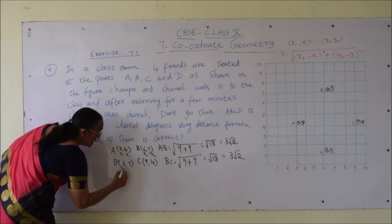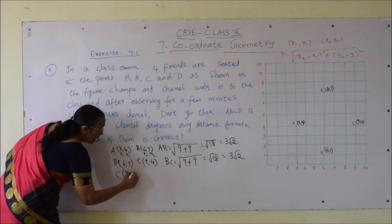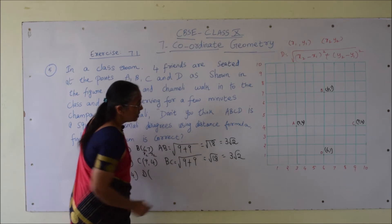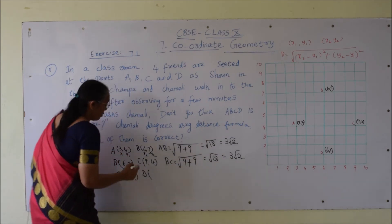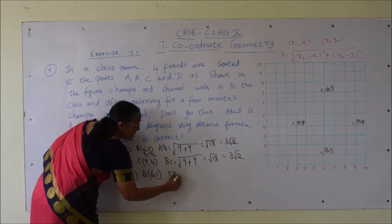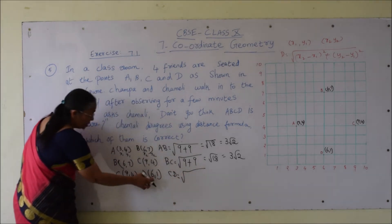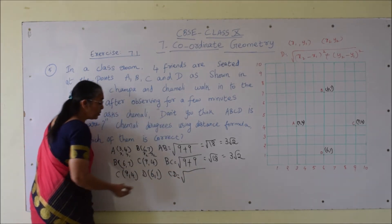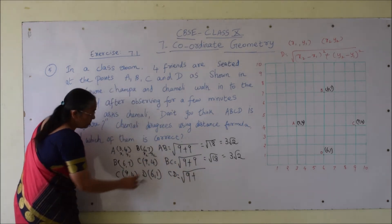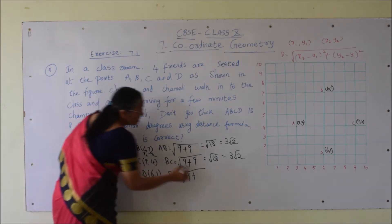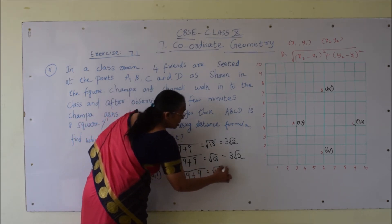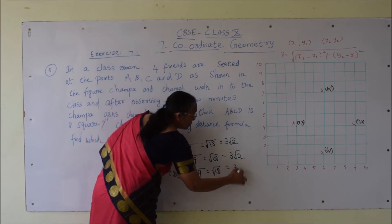Now distance CD. C point is (9, 4) and D point is (6, 1). Distance CD = square root of (6 − 9)² + (1 − 4)² = root over (−3)² + (−3)² = root over 9 + 9 = √18, which is again 3√2.